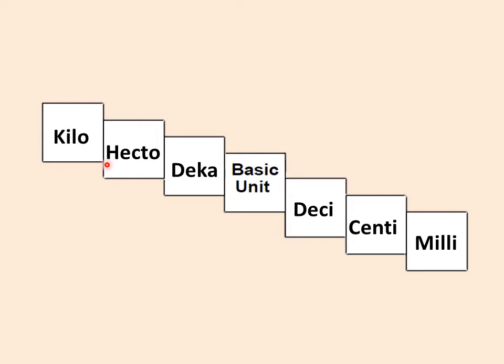So in 'King Henry Died Drinking Chocolate Milk,' K for King represents kilo, H for Henry represents hecto, D for Died represents deca, and so on and so forth.